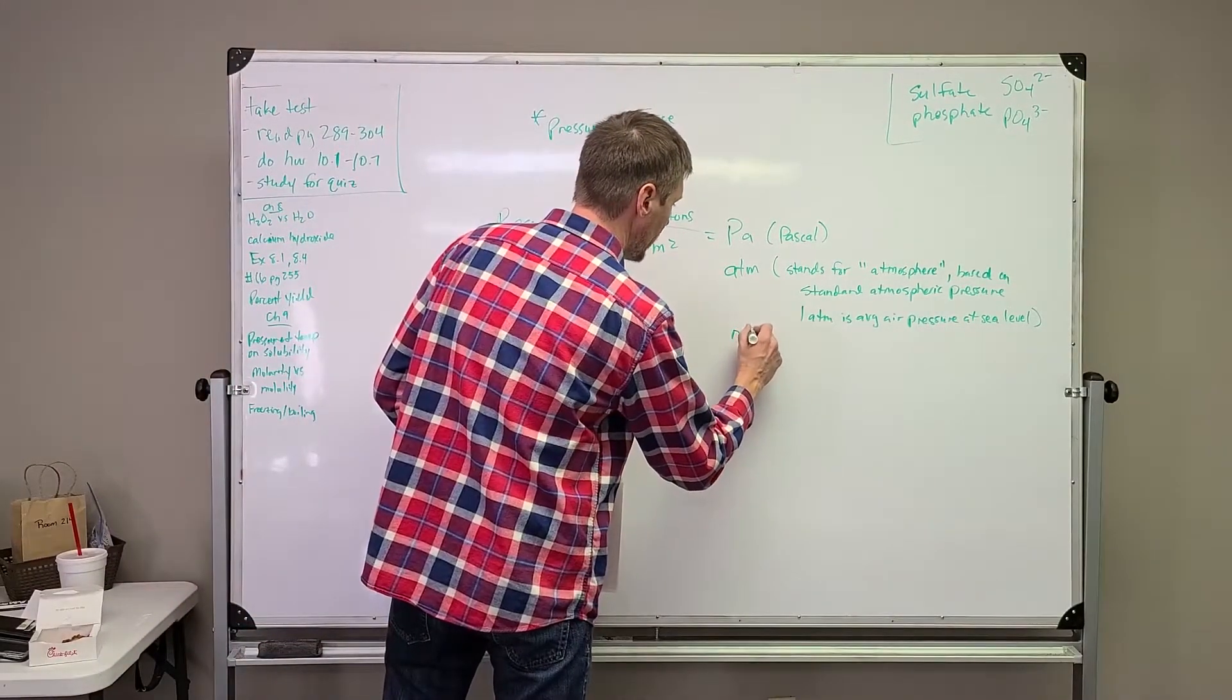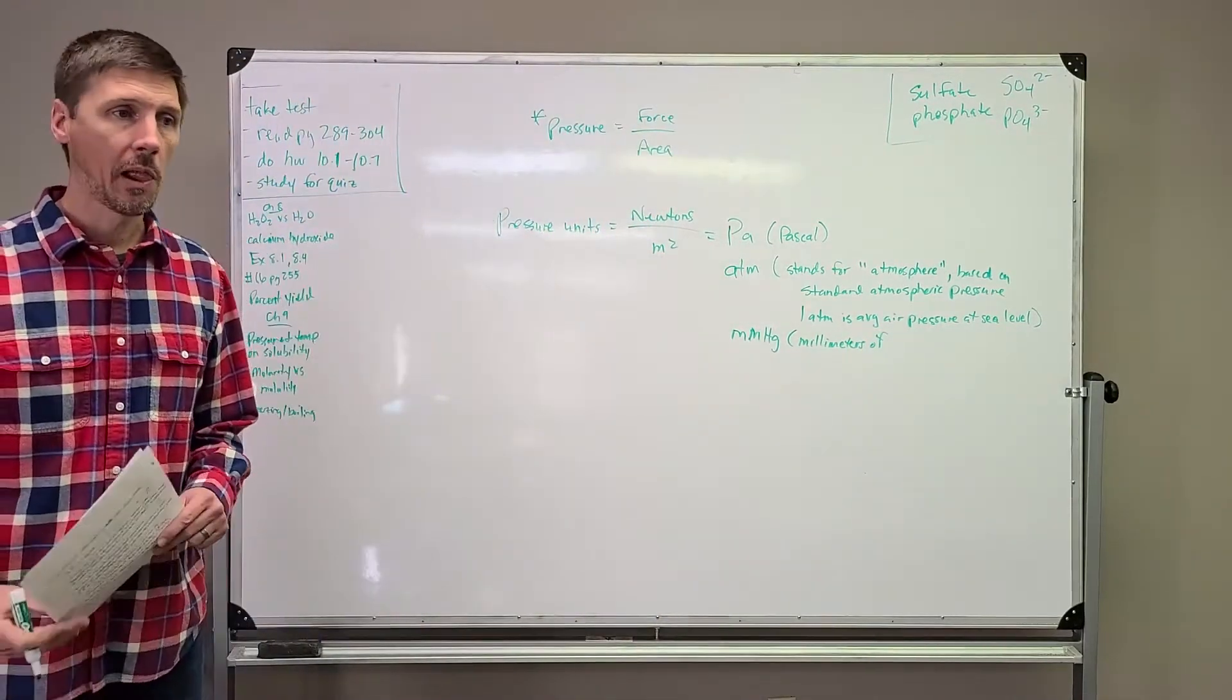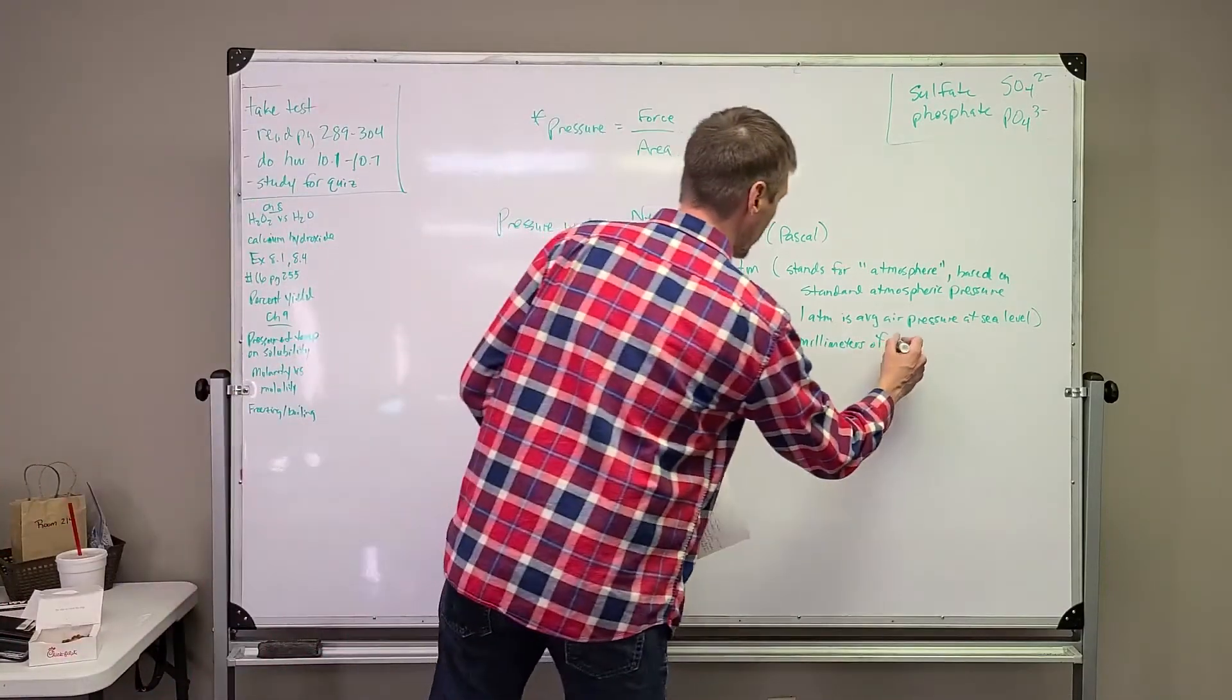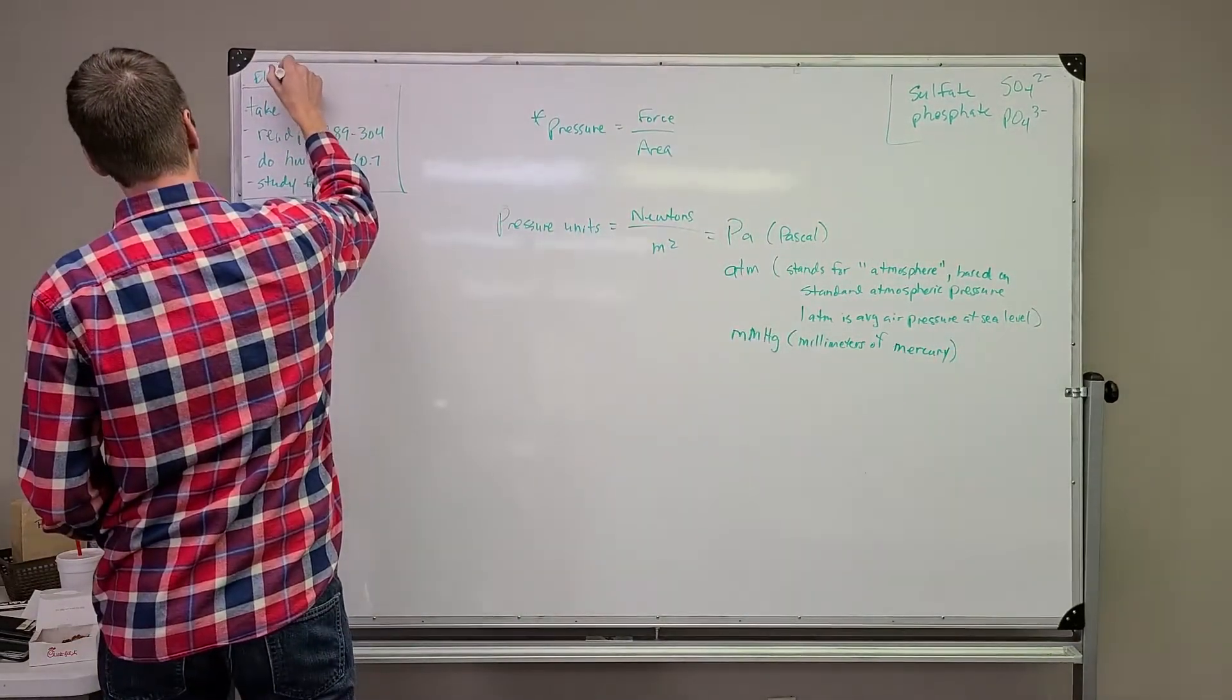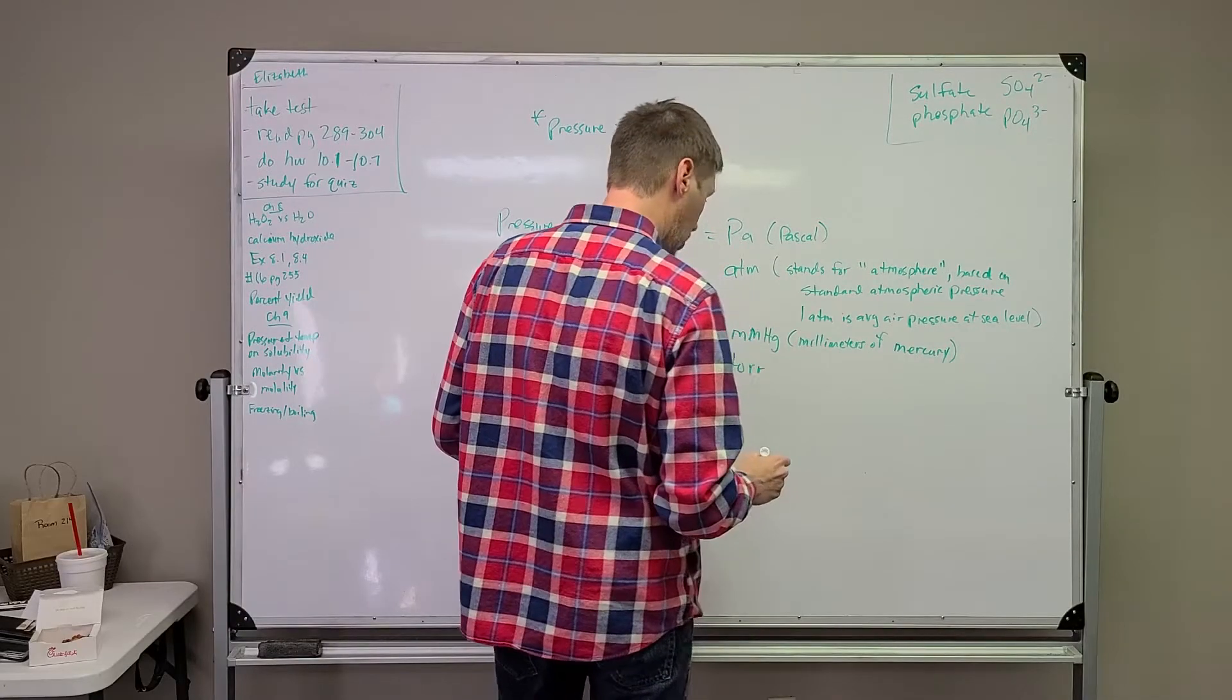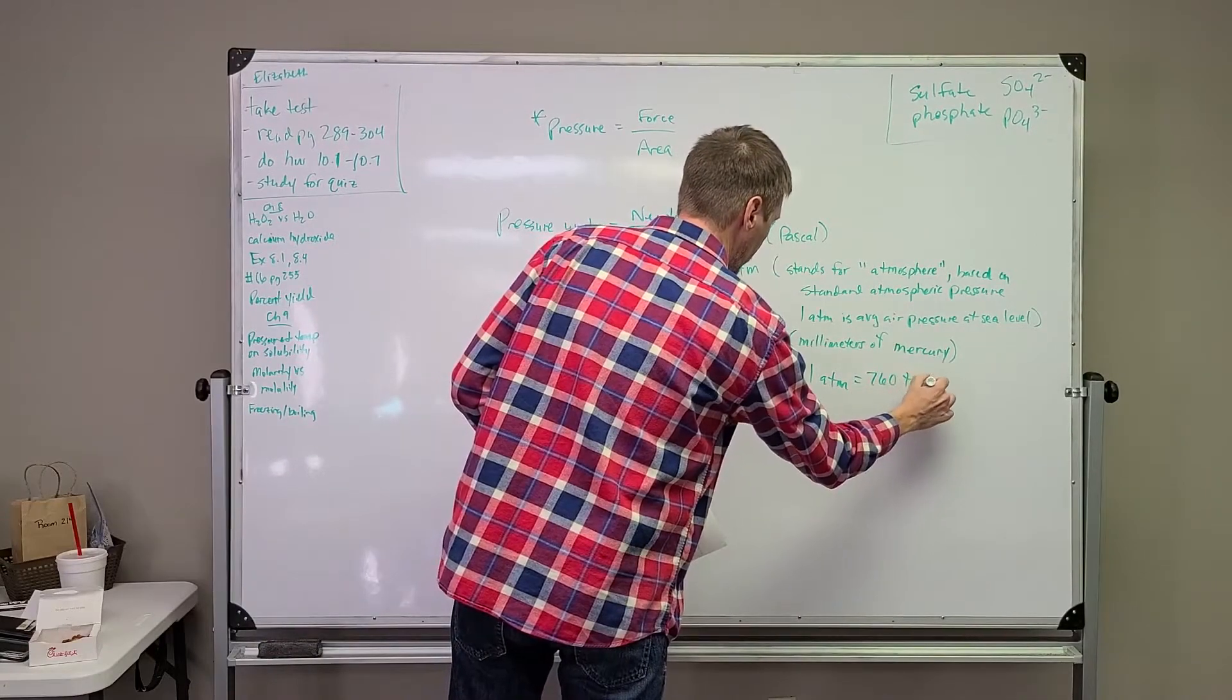It's based on standard atmospheric pressure. One ATM is the average air pressure at sea level. We've got another unit, which is mmHg, which stands for millimeters of mercury. And then finally our last unit, named after the inventor of the barometer, is Torr. You need to know this conversion: one ATM is equal to 760 Torr.